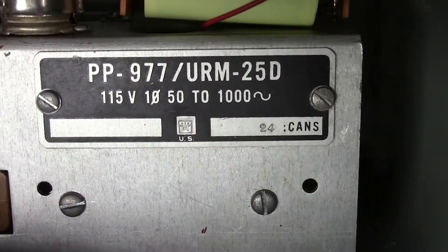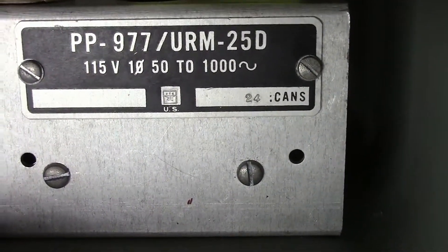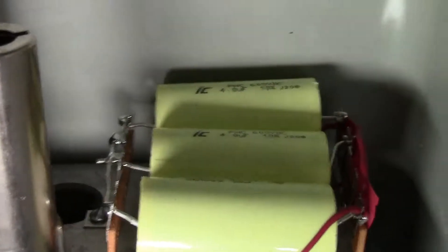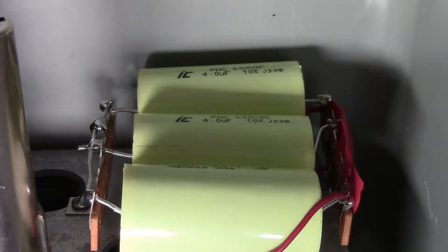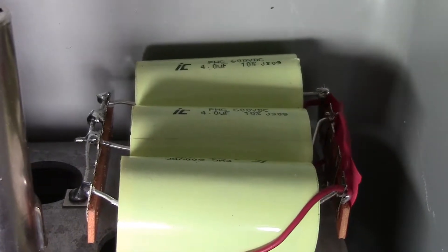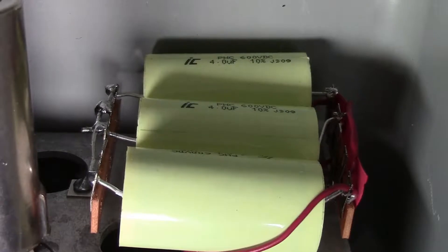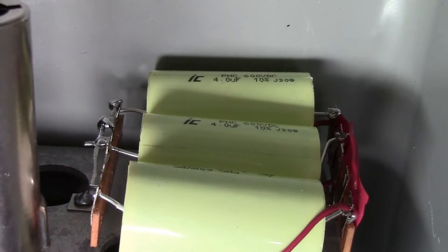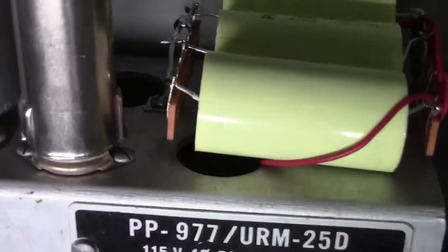This is the third installment of the repairs I made to the URM25D. This is the power supply section. Right here are the new capacitors that I installed to replace the old ones which were shorted out. Or at least one of them had spilled its guts all over the unit. So everything is replaced and squared away. It works just fine now.